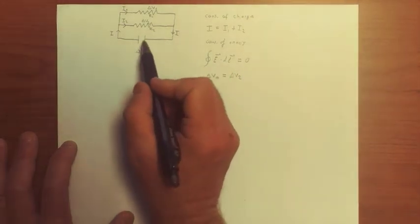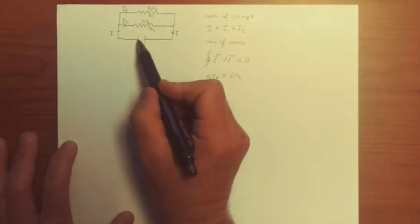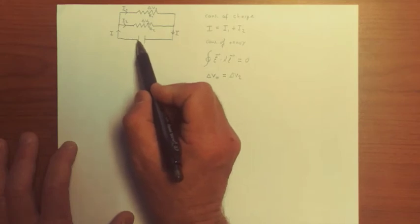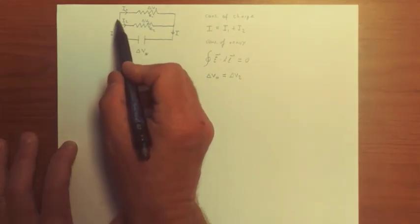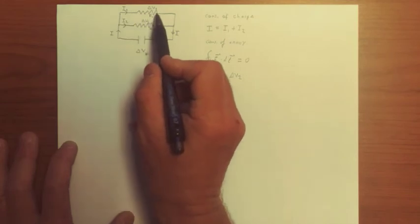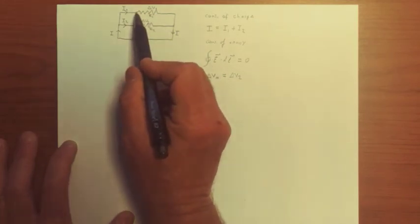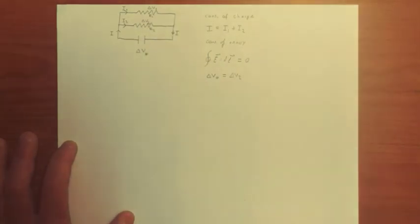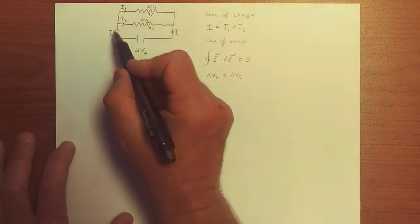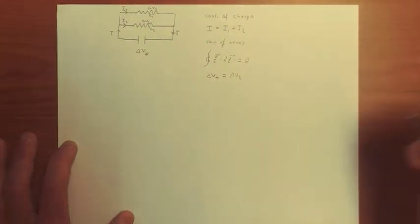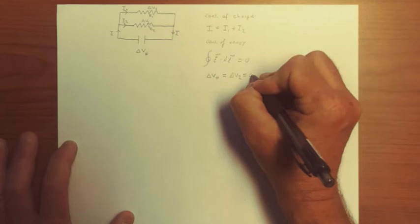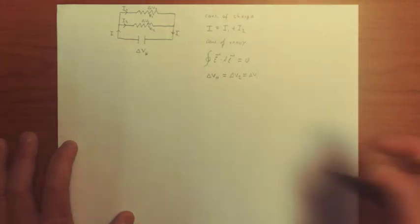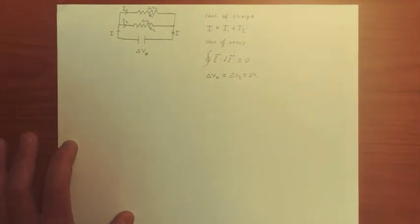But the same is true of the voltage delta V1 because, you know, I can start here and go through here and now have a voltage difference delta V star, but then go all the way up here and go through here, go through resistor with resistance R1, and voltage difference delta V1, come back around, that voltage difference must be zero because that's a closed loop, that's a different closed loop. And so it must also be true that delta V star is equal to, in magnitude, the voltage across resistor R1.